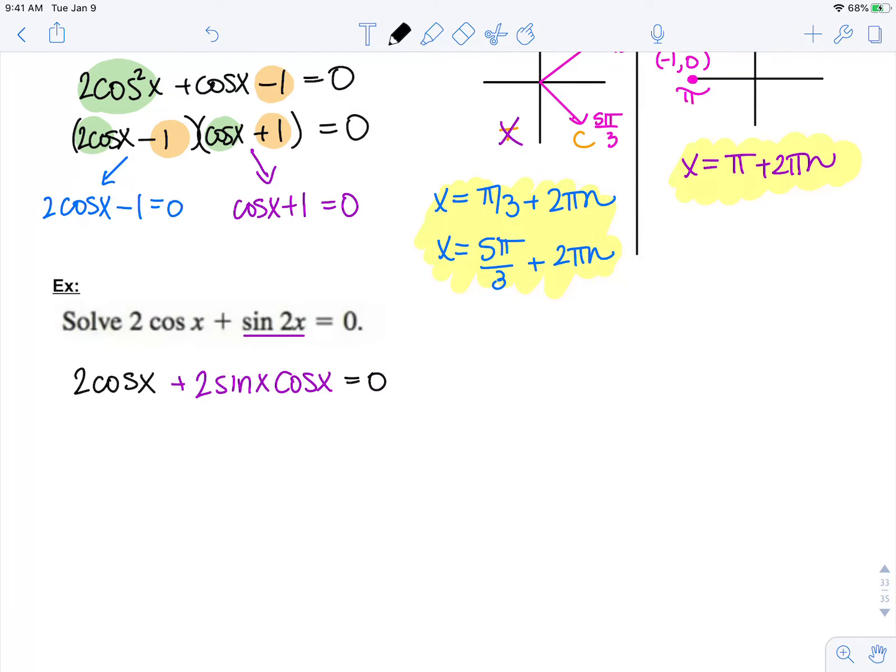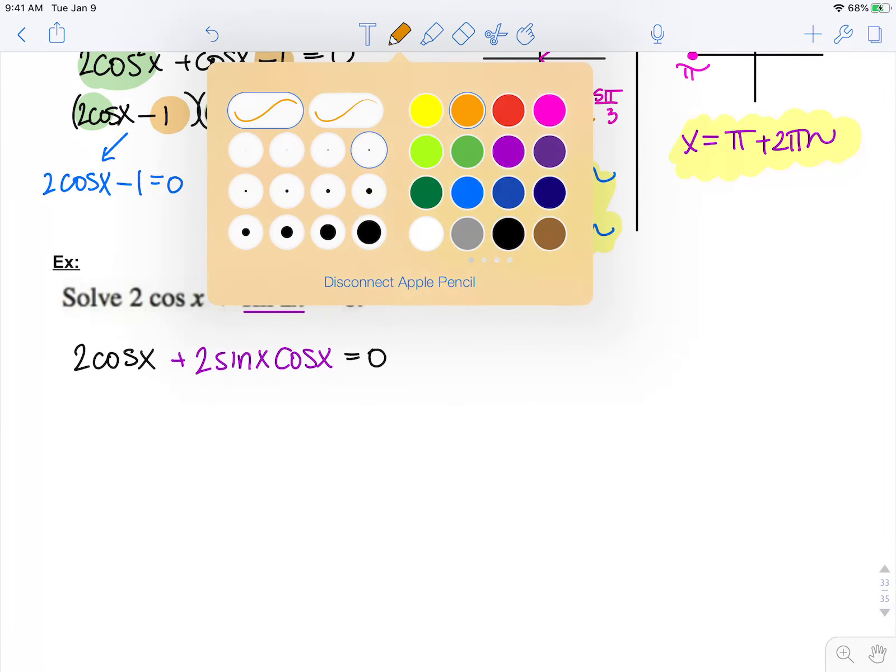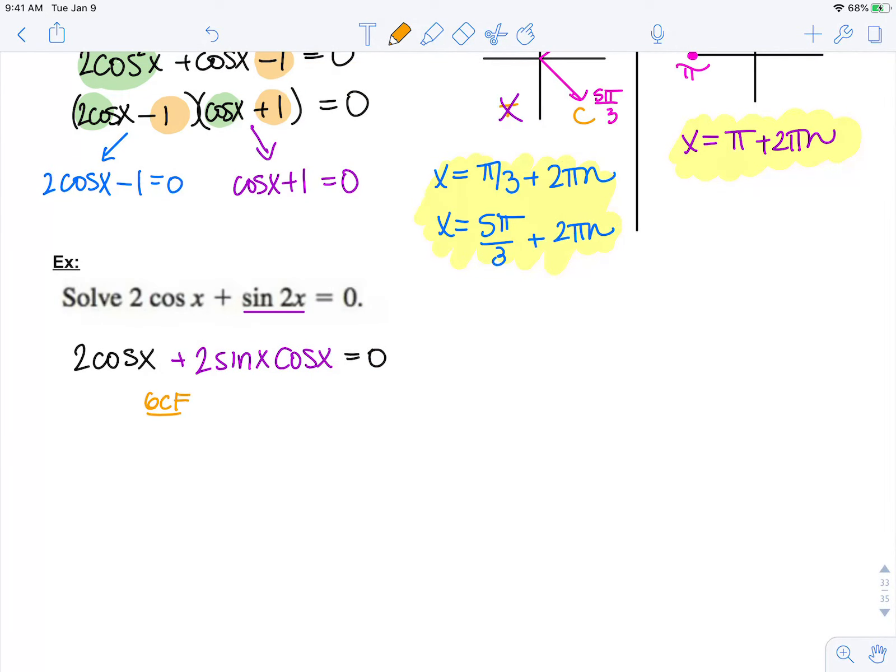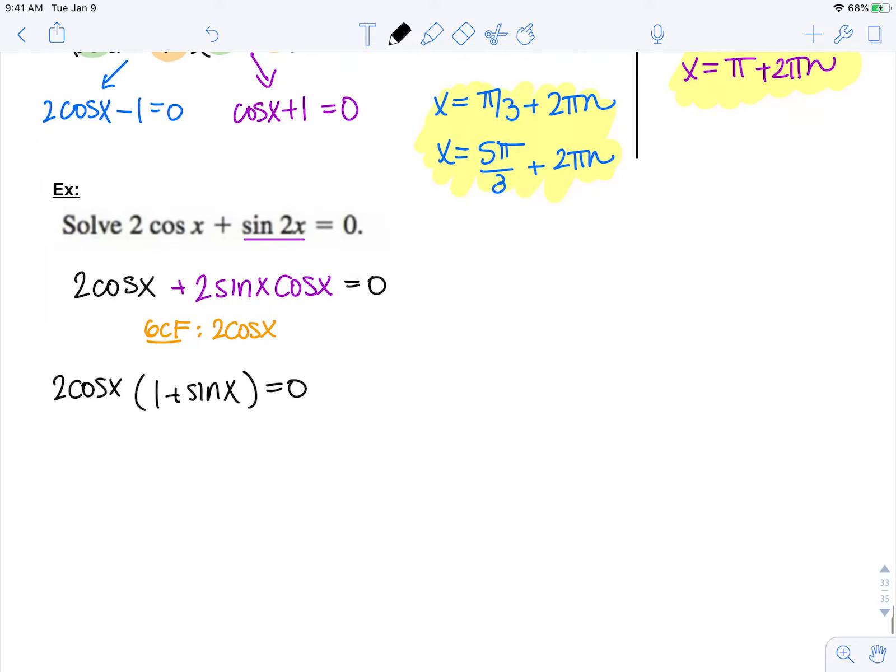Equals 0. So if I look at this now, it has a GCF of 2 cosine x. So if I factor that out, I have 2 cosine x times 1 plus sine x equals 0. So zero product property tells me that 2 cosine x equals 0 or 1 plus sine x equals 0. So I can solve both of these now.